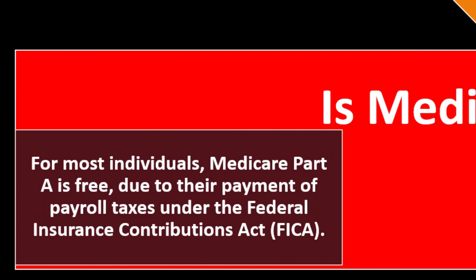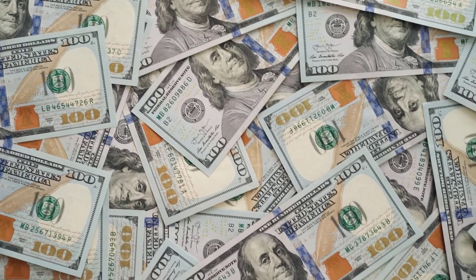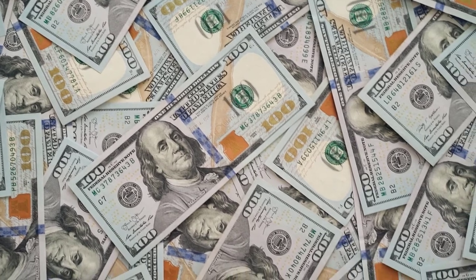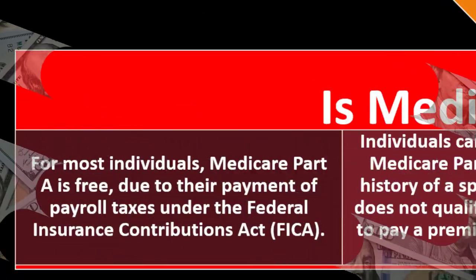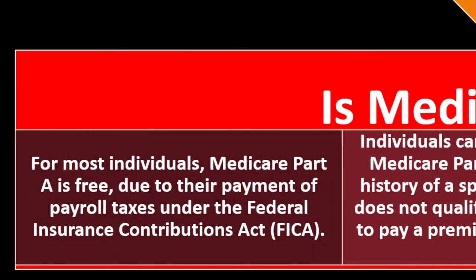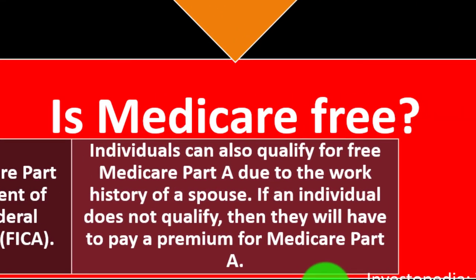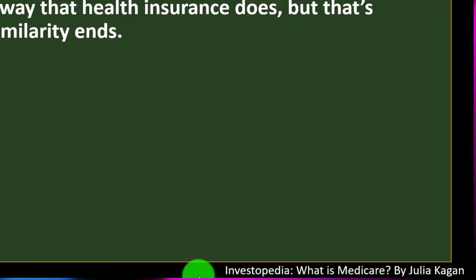These are big government programs that cost a lot of money, and how they work out from generation to generation is an interesting question — from both a political perspective and in terms of personal navigation. Will they be sustainable? Can they expand benefits cost-effectively? Individuals can also qualify for free Medicare Part A based on a spouse's work history. If an individual does not qualify, they will have to pay a premium for Medicare Part A. Other types of Medicare require a premium payment as well.